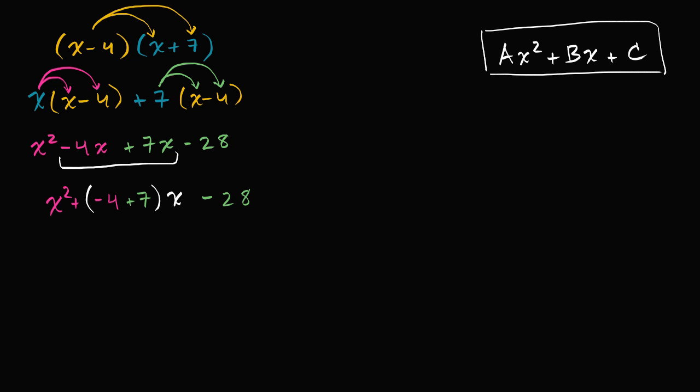And we're at the home stretch. This would simplify to x squared, now negative four plus seven is three, so this is going to be plus three x, that's what these two middle terms simplify to, to three x, and then we have minus 28. And just like that, we are done.